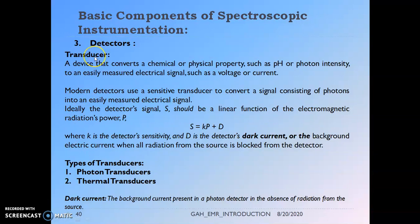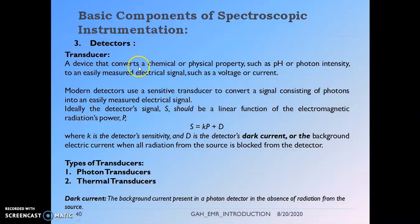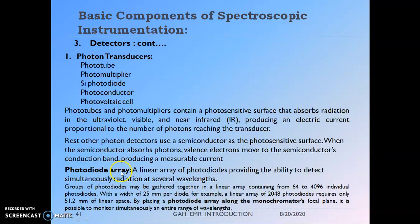Coming to detectors: a transducer is a component that converts a chemical or physical property such as pH or photon intensity to an easily measured electrical signal such as voltage or current. Transducers convert signals consisting of photons into easily measured electrical signals. There are different types of transducers: photon transducers and thermal transducers. Photon transducers include phototube, photomultiplier tube, silicon phototube, photoconductor, and photovoltaic cell. These will be studied in detail in the respective chapters.